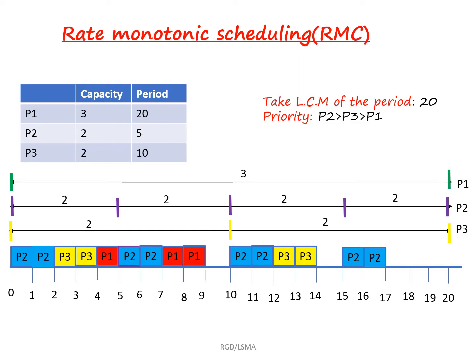Before moving on to the Gantt chart, you must understand the criteria of the rate monotonic scheduling algorithm. The criteria is that you have to first take the LCM of the period. Here the periods are 20, 5, and 10. If you take the LCM, you will get 20, and also you have to assign the priority of each and every process.